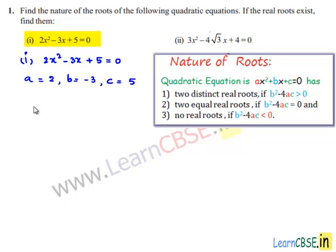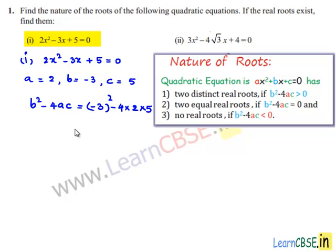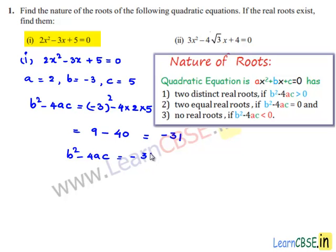Let us find the discriminant b² - 4ac. This is equal to (-3)² - 4 × 2 × 5, which is 9 - 40 = -31. So we got b² - 4ac as -31.